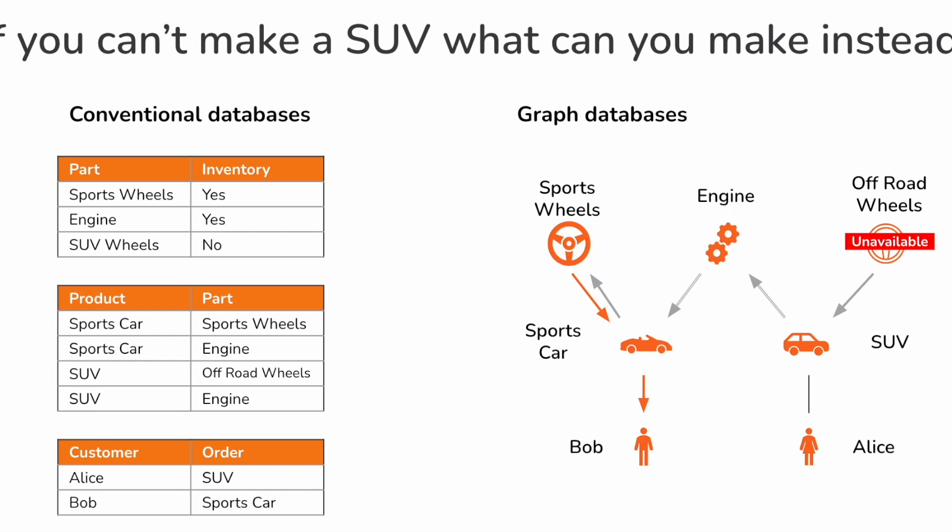The same cannot be said for a conventional database. Have a look at the tables on the left — you have a table for parts, a table for products, and a table for orders. It's actually exactly the same information as on the right, but you have to look pretty hard at it to work that out. And finding the car to make is even harder, because for every link on the graph on the right, you have to code a table join on the left.